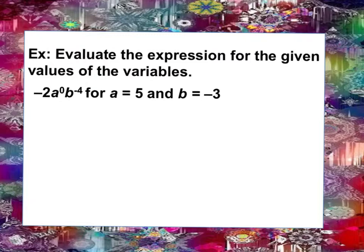So here we have our expression negative 2 a to the 0 power b to the negative 4th power, and we're going to substitute a for 5 and b for negative 3. When I do that, I keep my negative 2 the same.